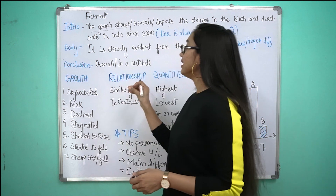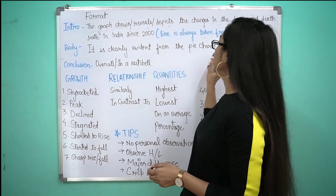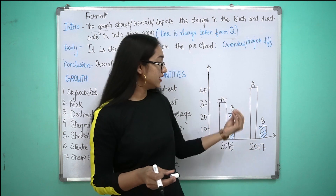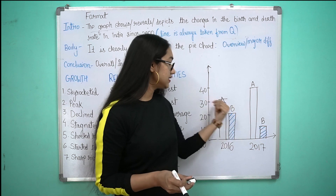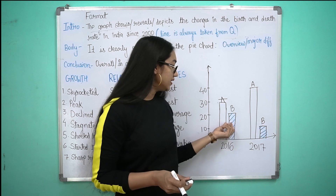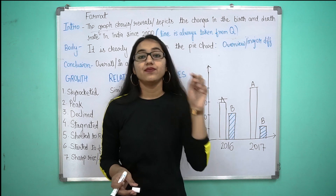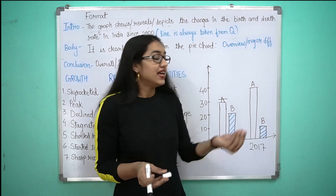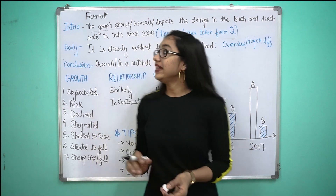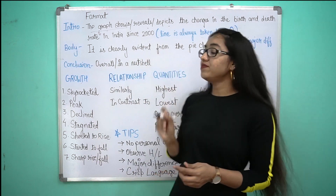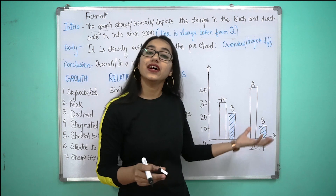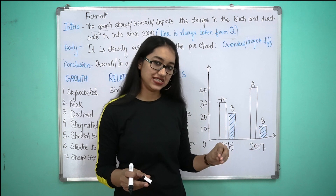Now how do we start? It is clearly evident from the pie chart — dash dash dash. This is how you begin when given a graph. For example, if A has sales of 30,000 and 40,000, and B has initial sales of 20,000 which fall to 10,000, the major difference we can clearly see is that people like product A more compared to B. So we write: 'It is clearly evident from the graph that people of so-and-so place liked product A more than product B in the year 2016 and 2017.'